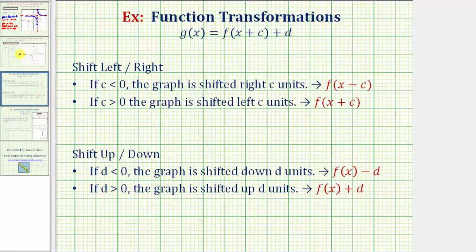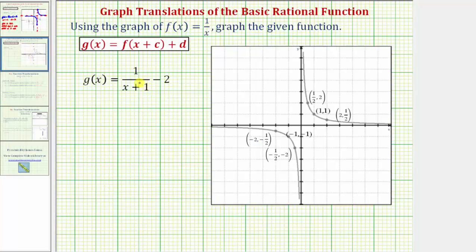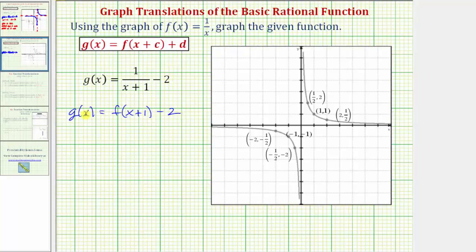So going back to our example, notice how because we have x plus one in the denominator and a minus two on the end, we can say that g of x is equal to f of the quantity x plus one, minus two. So this tells us that c is equal to positive one, and d is equal to negative two.